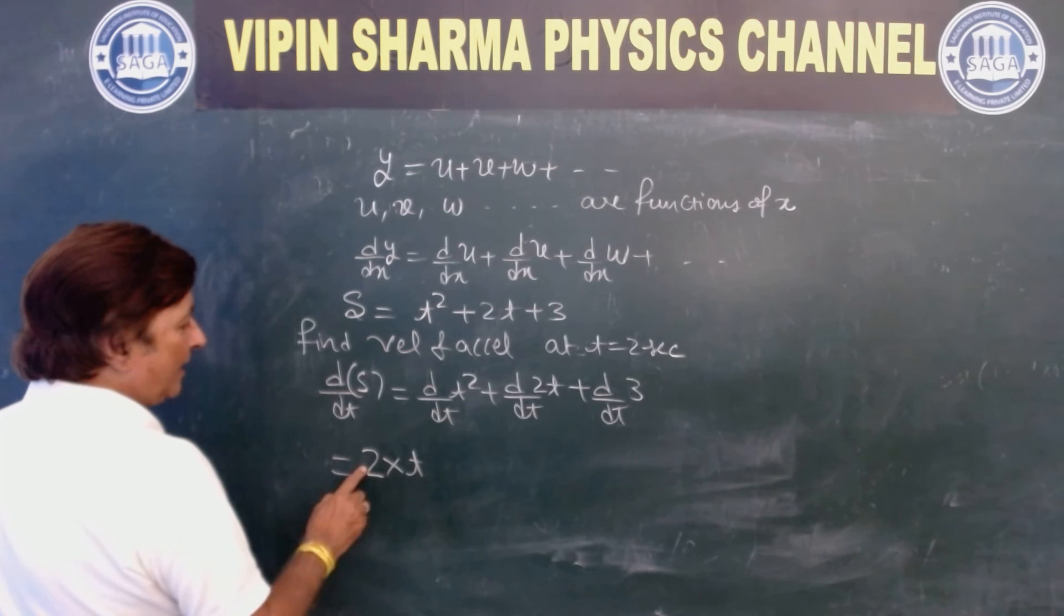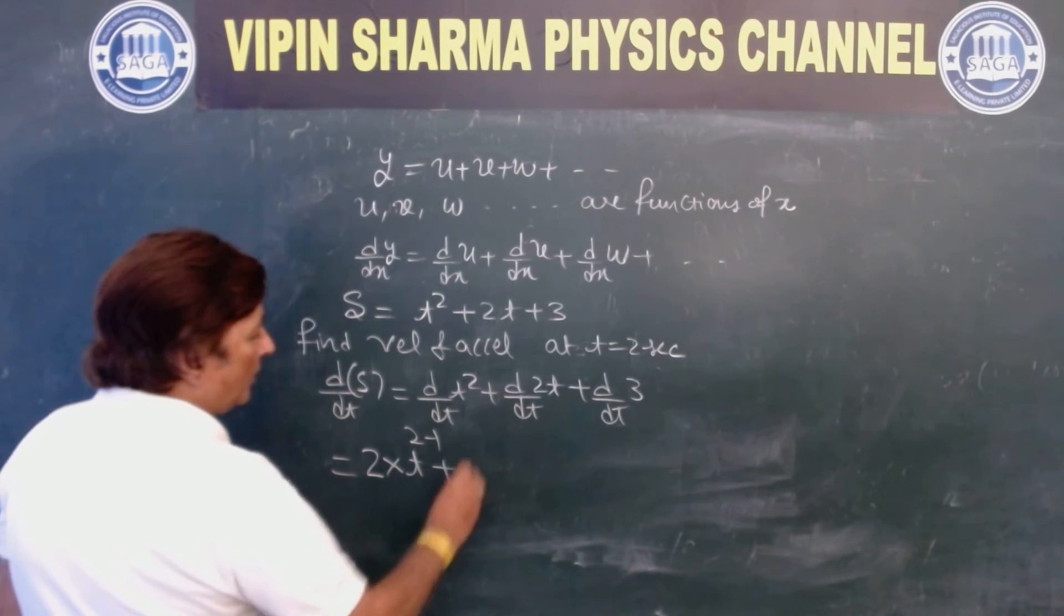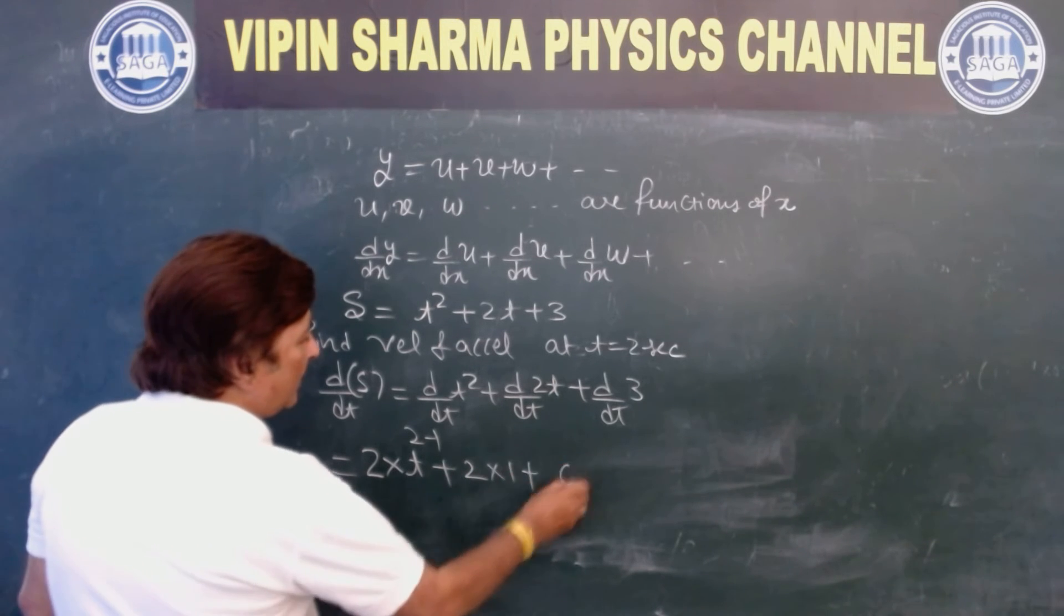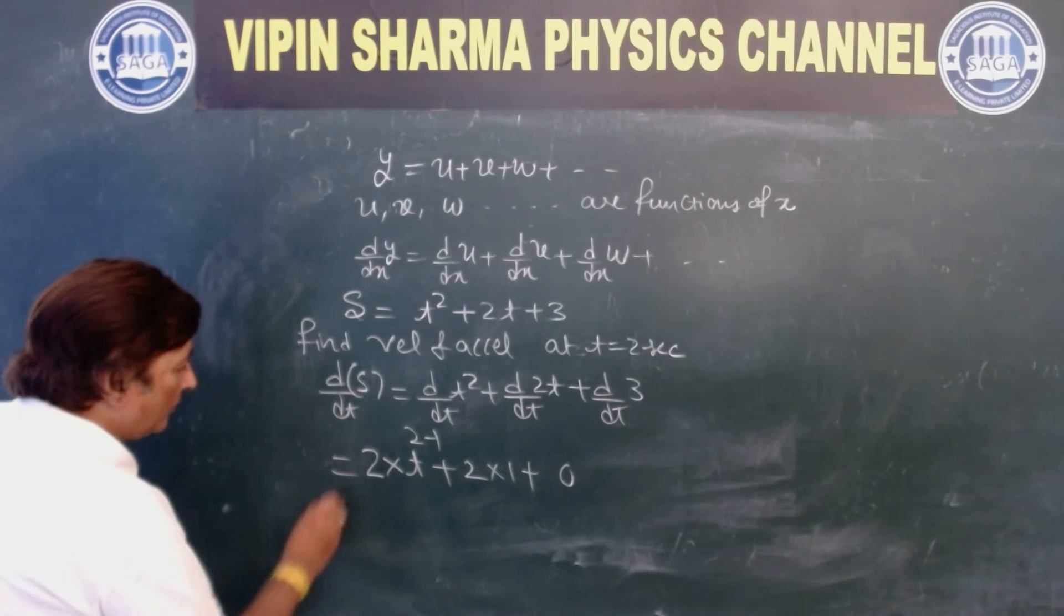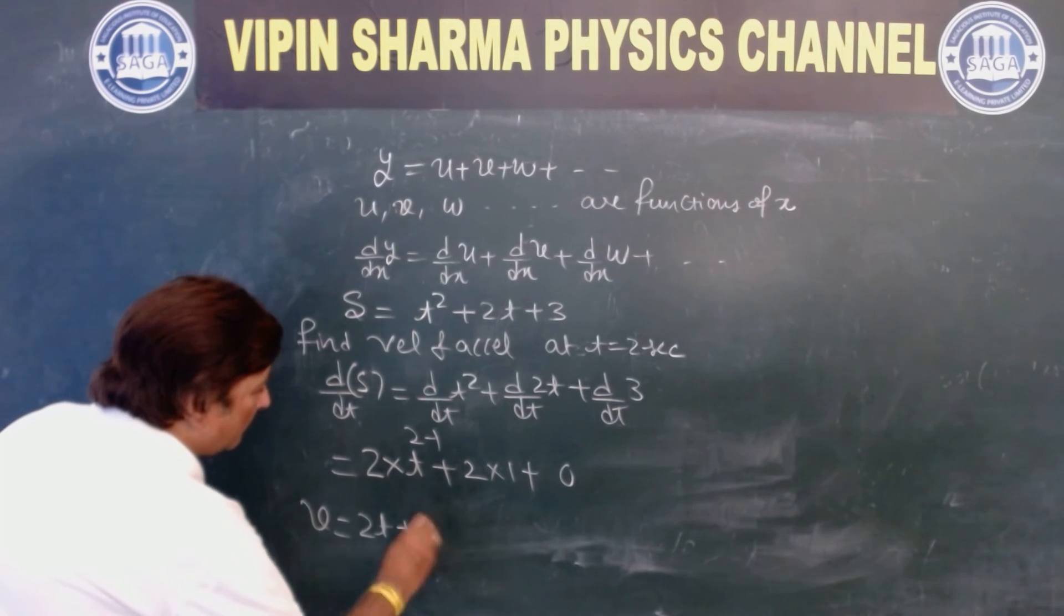This will be 2t to the power 2 minus 1. 2 is a constant, d/dt of t is 1, d/dt of 3 is constant 0. So d/dt of s is what? Velocity, that is 2t plus 2.